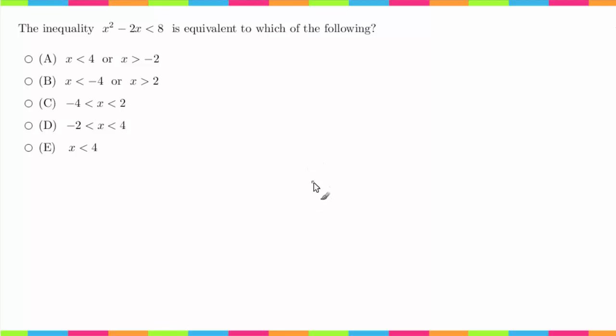So that being said, the other topic that they're really looking for you to know how to do is how to factor polynomials. So when you see a question like this, the first thing you're going to do is bring the 8 over to the left-hand side. So that will become x squared minus 2x minus 8 is less than 0.